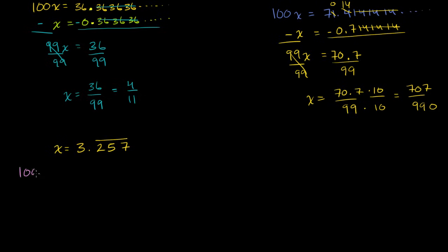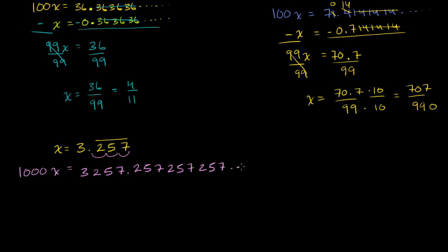So 1000x is going to be equal to — we're shifting the decimal 3 to the right — so it's going to be 3257 point, and then 257 keeps repeating: 257, 257, going on forever. Then we subtract x, where x is equal to 3.257257257 and so on. Notice that when we multiplied by 1000, it allowed us to line up the 257's, so that when we subtract, the repeating part cancels out.